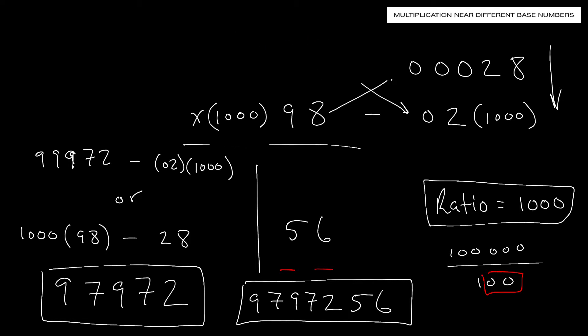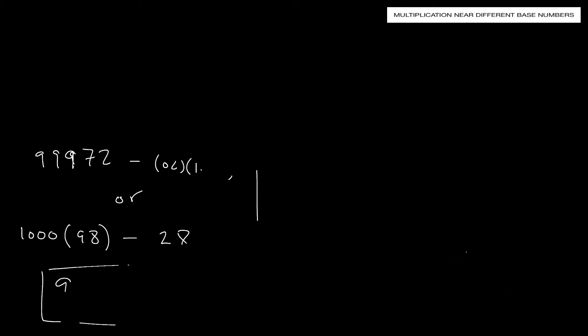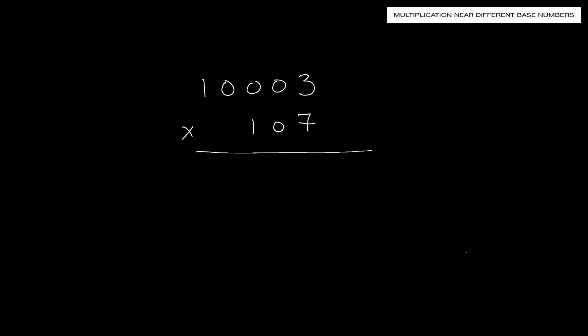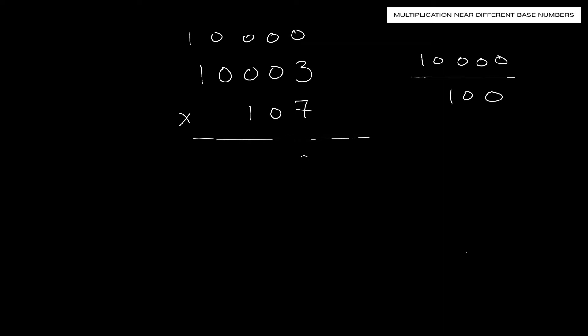One more problem. This is similar to multiplying near base numbers — the only difference is increasing by the ratio before cross-subtraction or addition. Here, the base numbers are 10,000 and 100, giving us a ratio of 100 after canceling zeros.